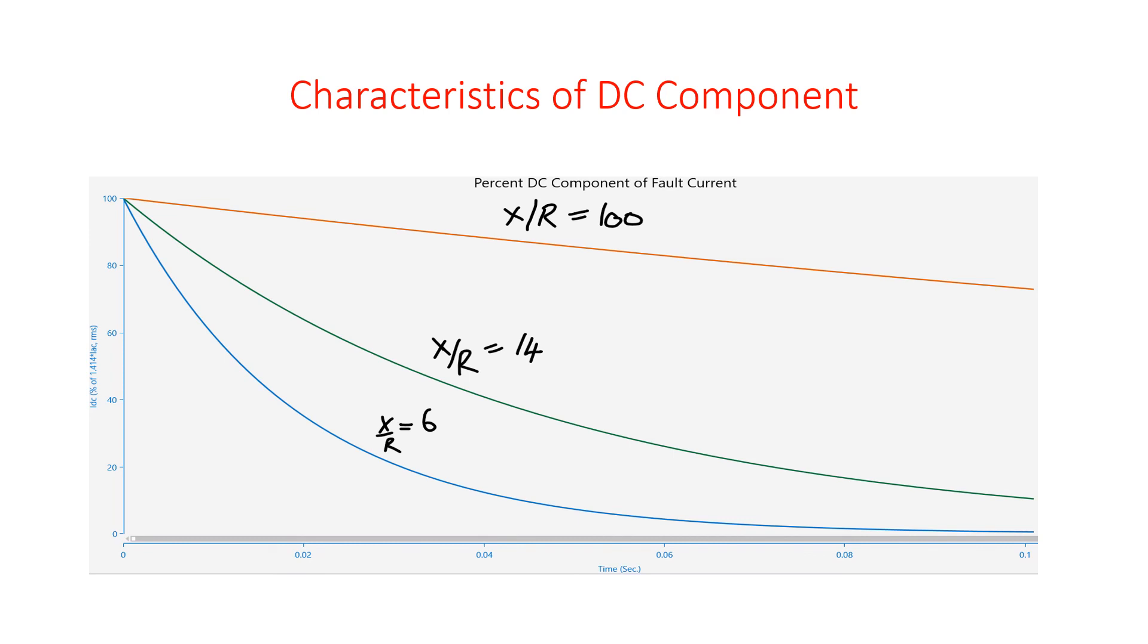This is how the peak value is different in the case of previous ETAP model. X by R value deciding the DC component decay, which in turn decides the peak current of fault current. I hope you can understand what is the importance of X by R ratio in the power system.